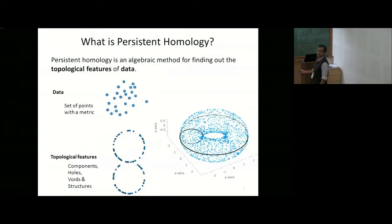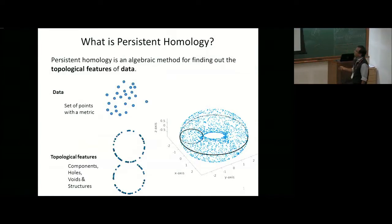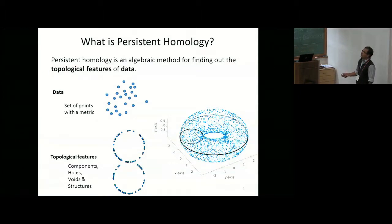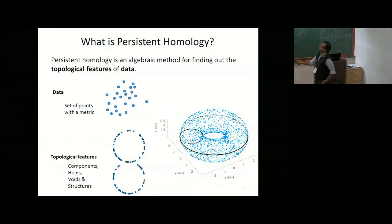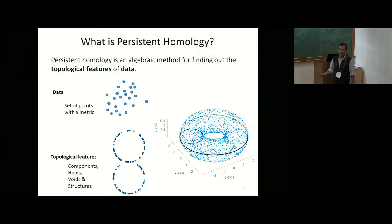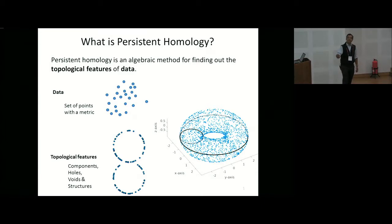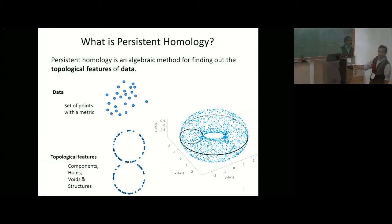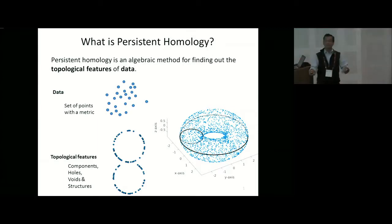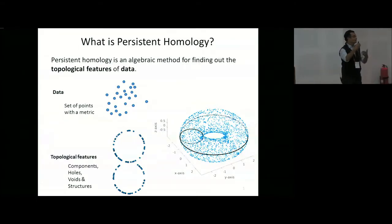Persistent homology is an algebraic method for finding out topological features of data. Data corresponds to a set of points that has some metric — how far or how close the set of points are in arbitrary dimensions. The topological features one is interested in are the number of components, the number of holes — here I have a figure-of-eight, I can see two major holes — and higher-dimensional features such as voids. In this torus, the annulus is called a void. We can ask how these features appear in higher-dimensional data.